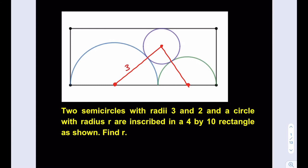Now, we know that this is a 3, that's a 3, that's a 2, that's a 2, and what else do we know? This is r. We don't know the radius of the circle, we're trying to find it. Now, in this problem, what else do we know? We know that this is a 4 by 10 rectangle, so these are the lengths.